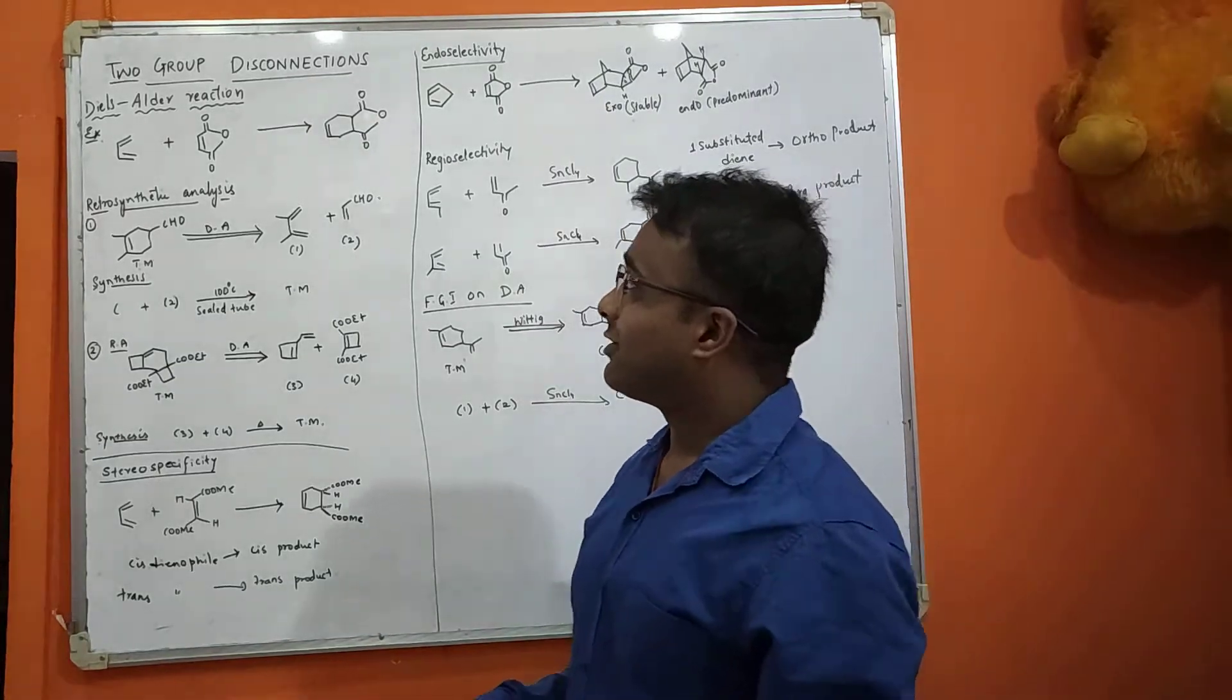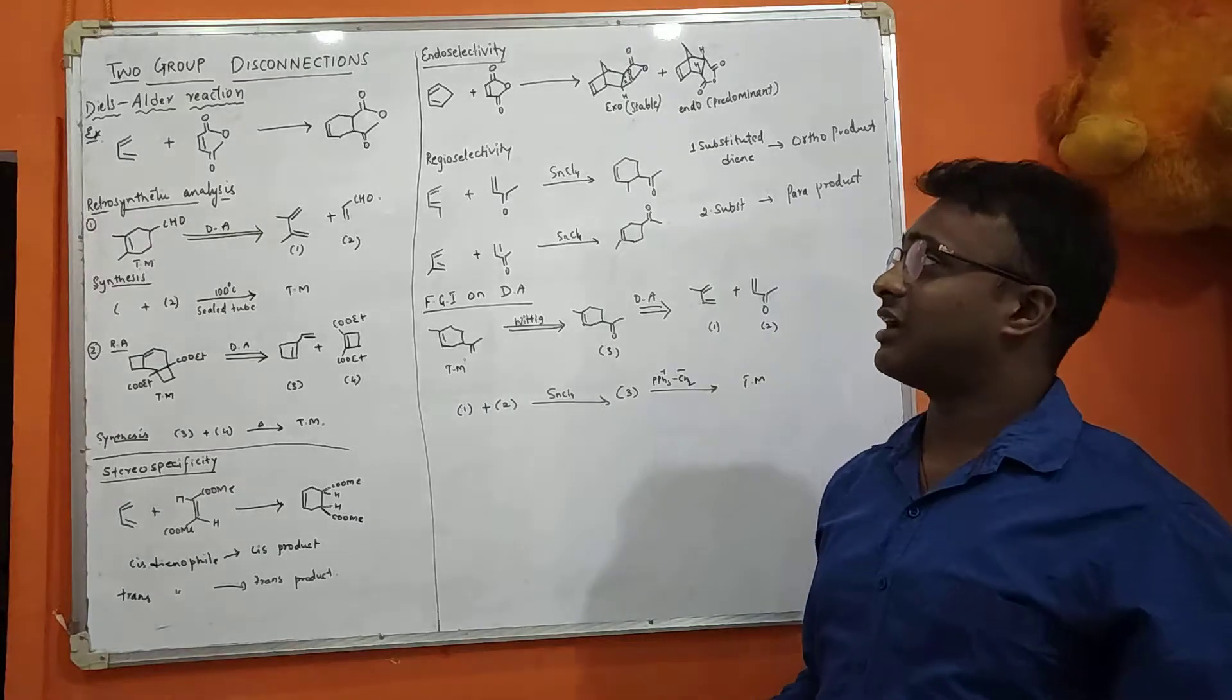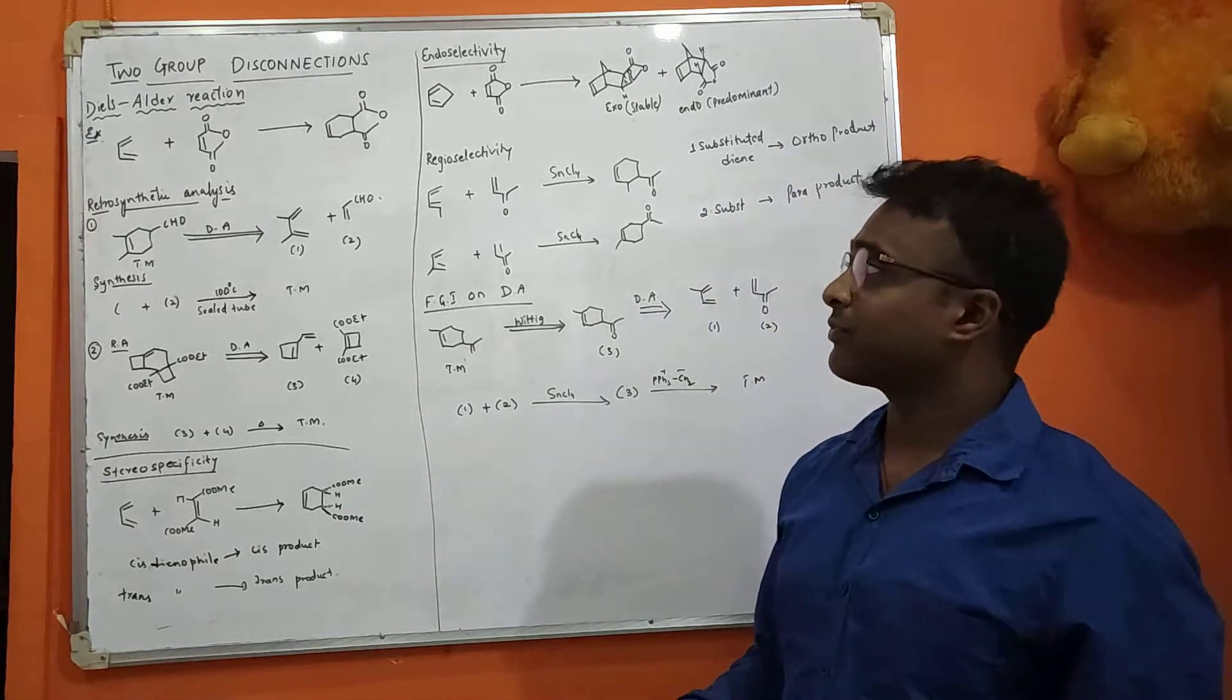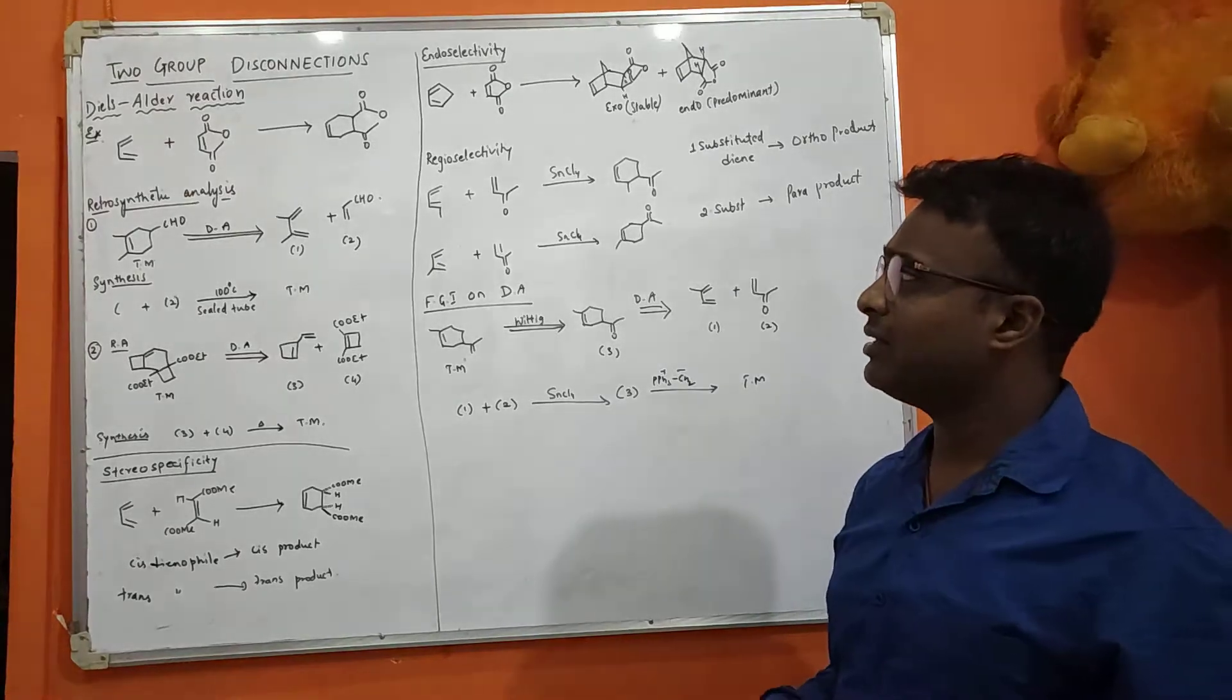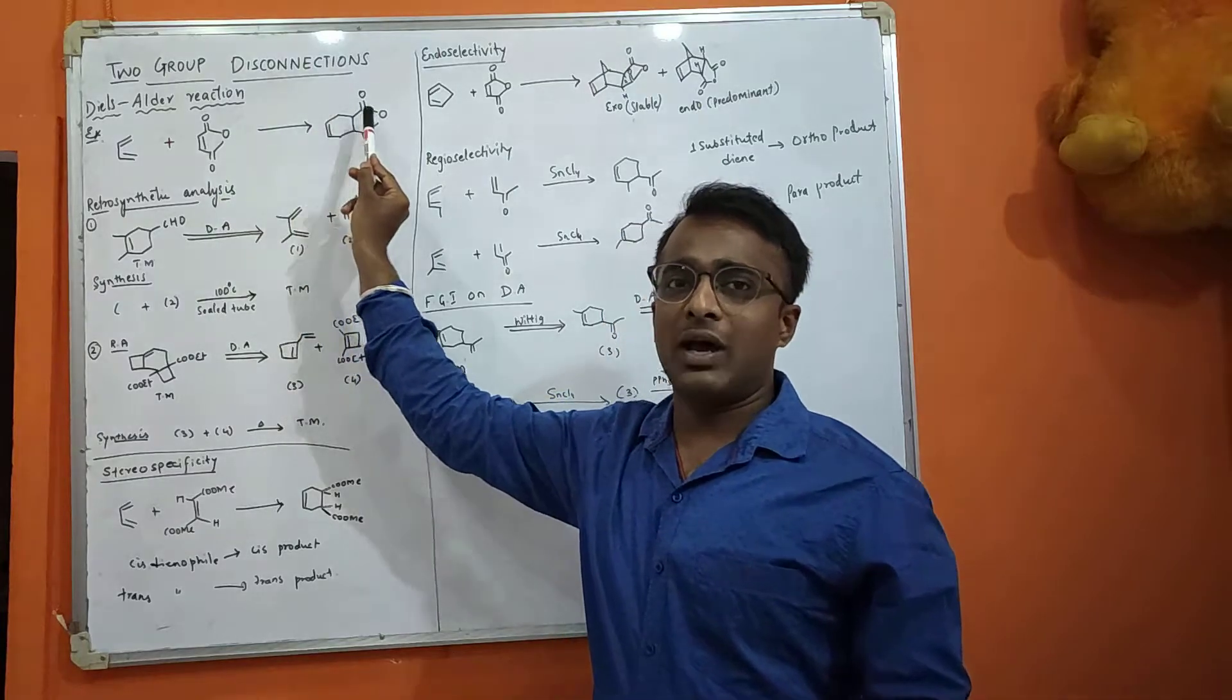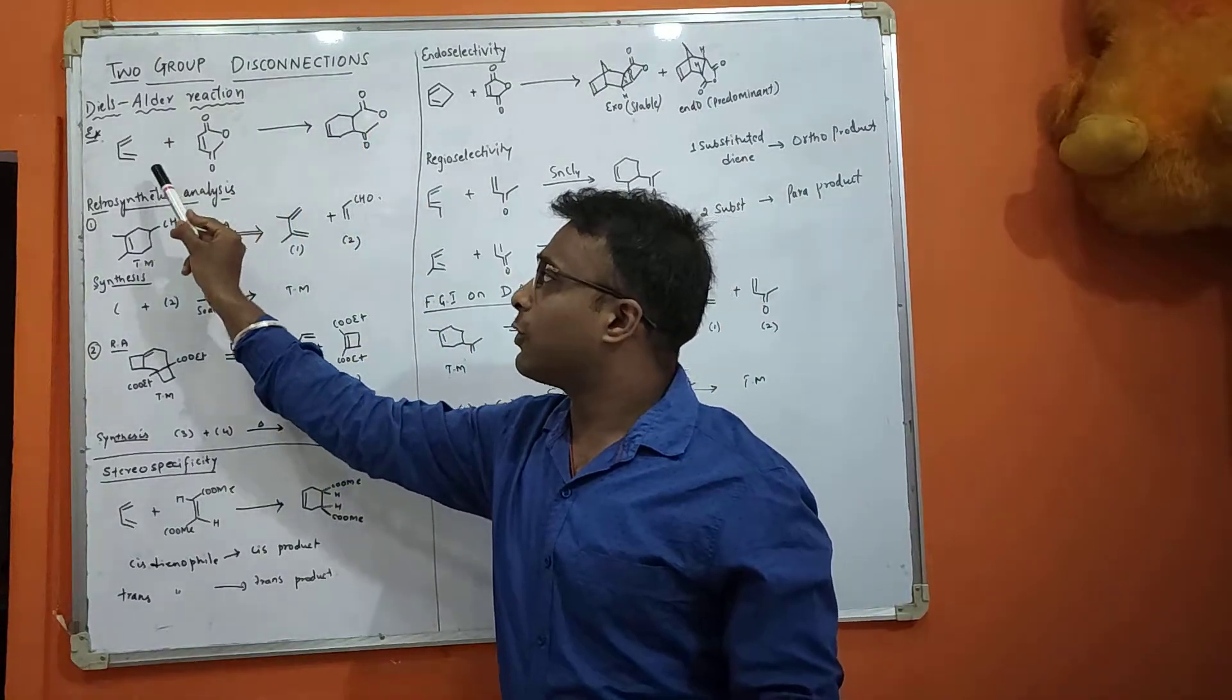We have discussed Diels-Alder reaction in third semester in pericyclic reactions. Now we are going to study the same concept in retrosynthetic analysis. This is very simple. A diene with a dienophile will give you an adduct. This is a simple example you know well, so I'm not going to explain this.